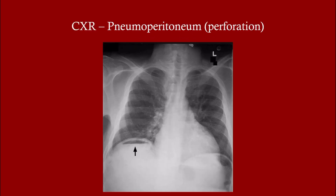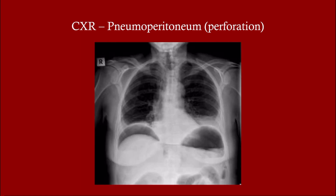If there is a perforation — and this applies to anything — look for free air under the diaphragm, particularly between the diaphragm and the upper margin of the liver. Pneumoperitoneum is a sine qua non for bowel rupture or perforation, and is an indication for surgery.